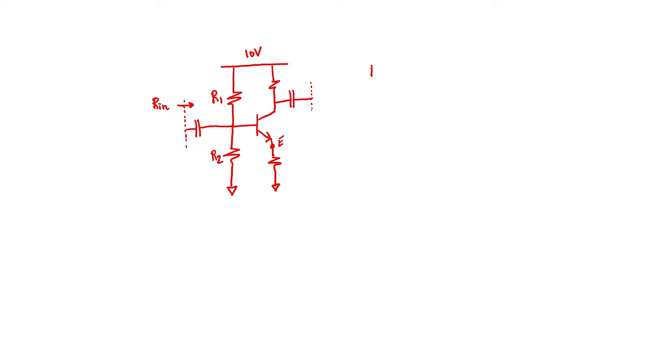By inspection, I can say that the input impedance is approximately R1 in parallel with R2. In other words, I have a branch going up here, and I have a branch going down here. I'm kind of ignoring the branch going into the base of that transistor because I happen to know that the impedance looking into the base of a transistor tends to be very large. So if I add a large resistor in parallel with two smaller resistors, then it's not going to change the answer too much. So the input impedance here is essentially R1 in parallel with R2.